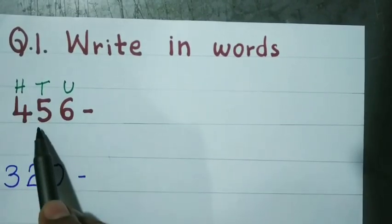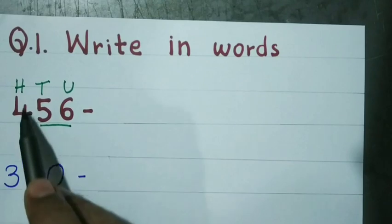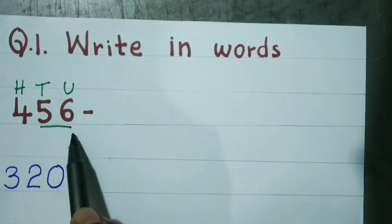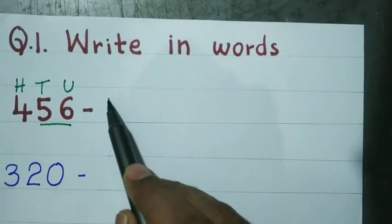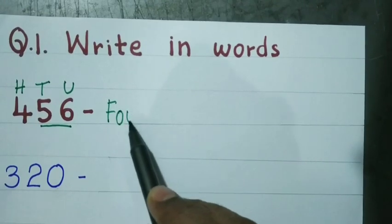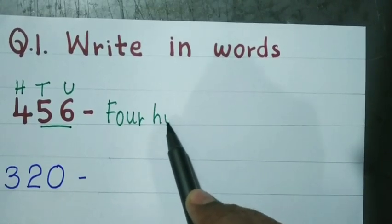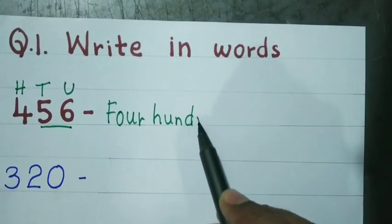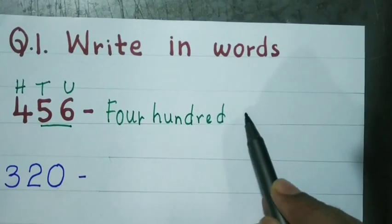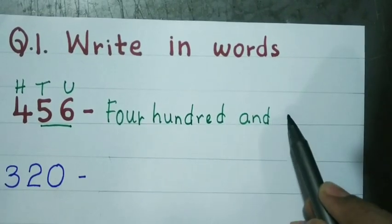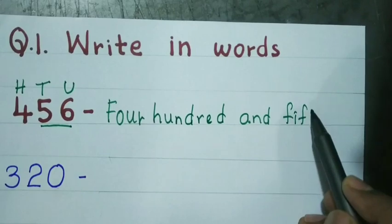400. These two numbers are read together: 400 and 56. Write the spelling of 400 and 56.